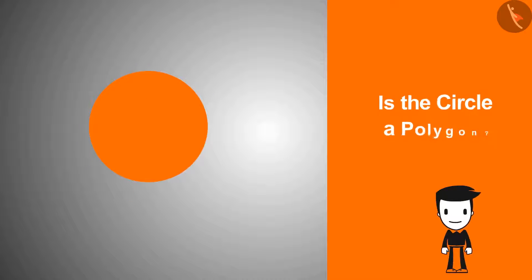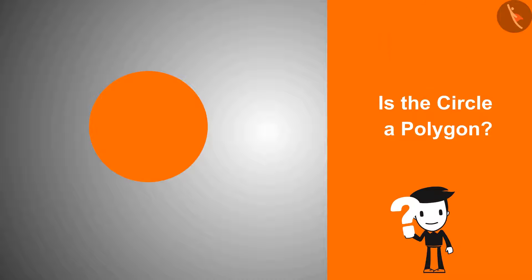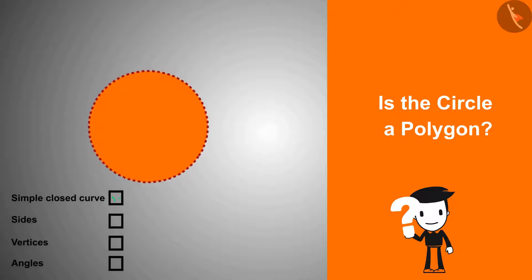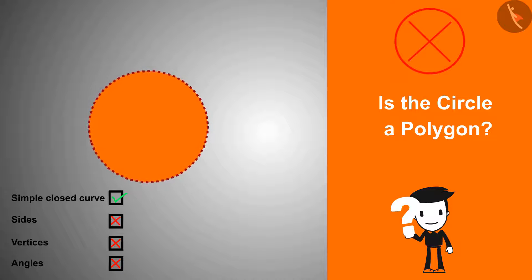Is the circle a polygon? The circle is a simple closed curve, but does it have sides, vertices or angles? No, so it is not a polygon.